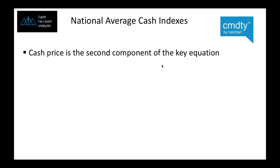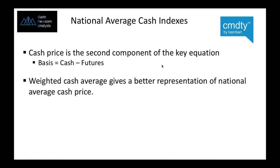Now let's go into the cash indexes themselves. Cash price is the second component of the key equation: basis equals cash minus futures. If you're a producer or a trader, you really want to know what the cash market is. These weighted averages give us a better representation of national average cash price.